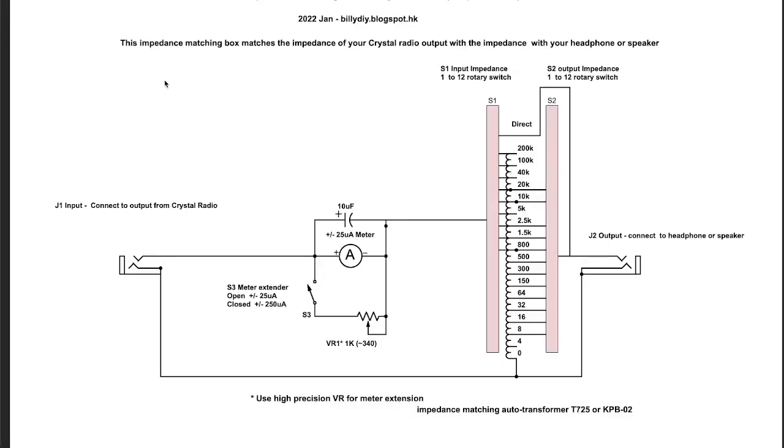This is the diagram for the impedance matching box for crystal radio. I'm showing you the simple version; there's another more complex version that I can show you later. First we take the input from the output of the crystal radio and connect it to the J1 jack, and the signal goes to the current meter. We choose the micro ampere meter because of the weak signal that crystal radio deals with.